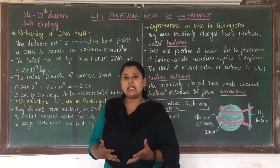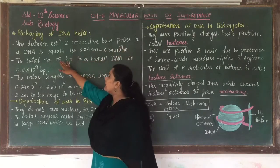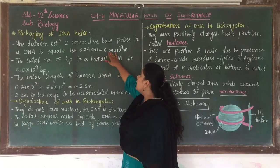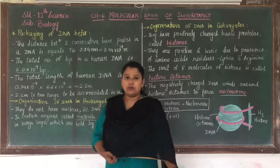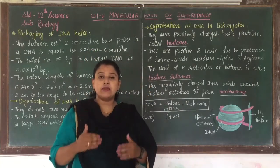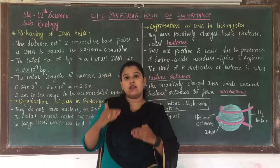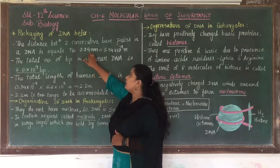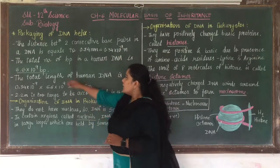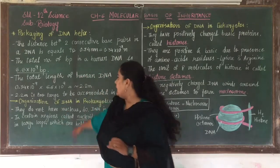The distance between two consecutive base pairs in a DNA is equal to 0.34 nanometers, which is 0.34 × 10⁻⁹ meters. So the distance between one base pair, say A-T, and the next base pair, G-C, is 0.34 nanometers. The total number of base pairs in human DNA is 6.6 × 10⁹ base pairs.